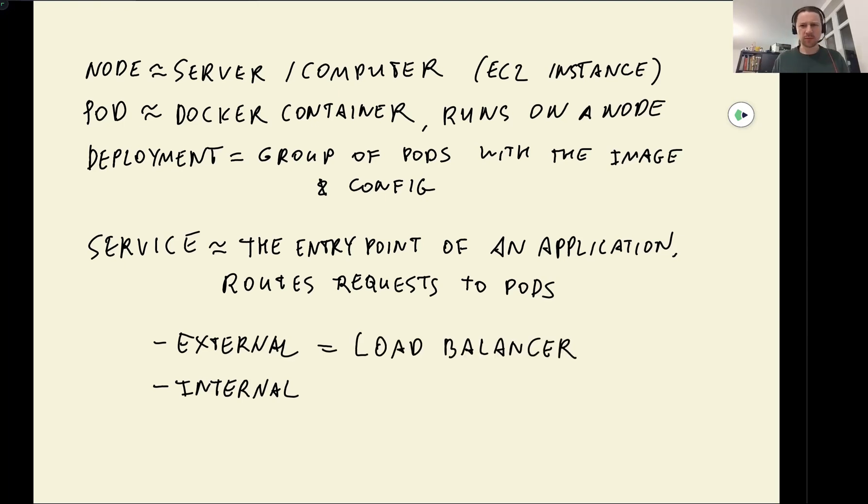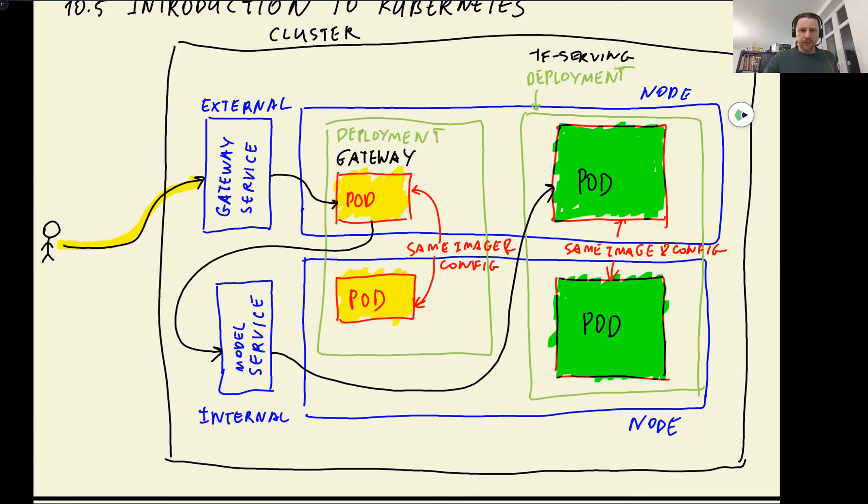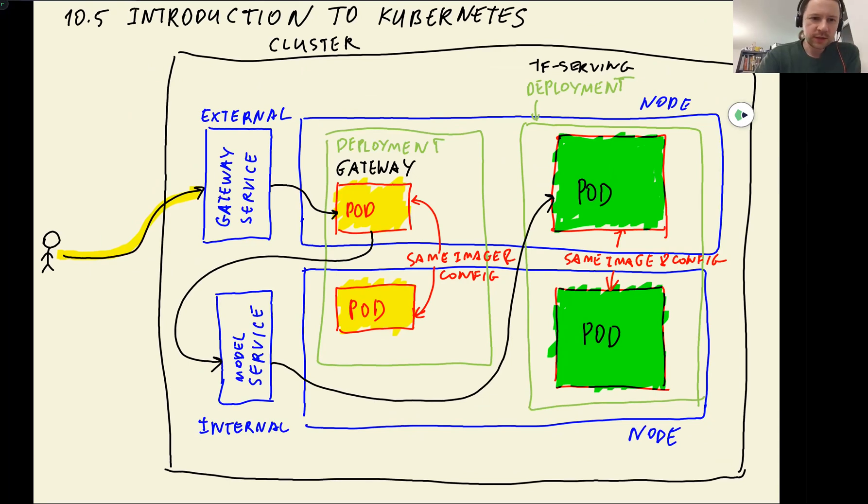So external in Kubernetes terms is called load balancer. And internal, I don't remember something like cluster IP, but this is the default value. So if you don't specify the type of the service, it will be an internal one. I think it's cluster IP. So let me just write it down. If I'm not correct, I will add a node later. I think it's cluster IP. And then it's a technical detail.